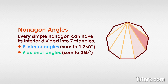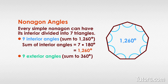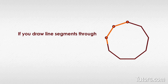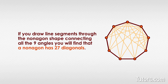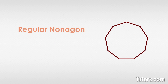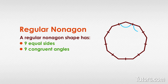Every simple nonagon can have its interior divided into seven triangles. You can find the sum of interior angles by multiplying seven times 180 degrees, which gives you 1260 degrees. If you draw line segments through the nonagon connecting all nine angles, you will find that a nonagon has 27 diagonals.